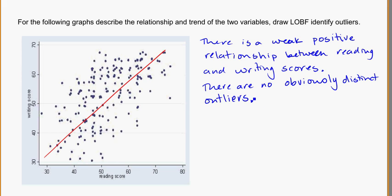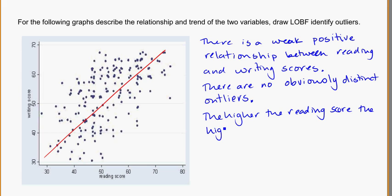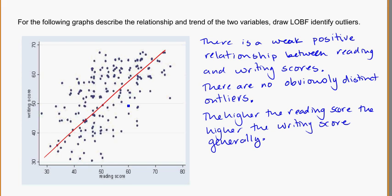Putting this into words: the higher the reading score, the higher the writing score, generally. It's not true for everyone, but that's sort of the trend we see. It's weak — it's not incredibly strong — but that's what we would say.